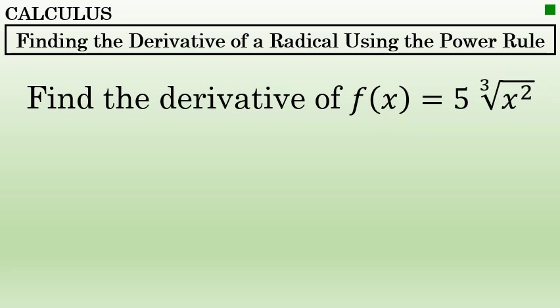To find the derivative of a function where there is a variable under the radical sign but is only one term, the power rule for differentiation can be used. This process can be described in three steps.